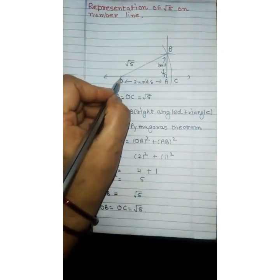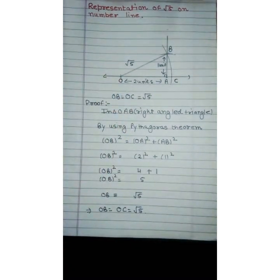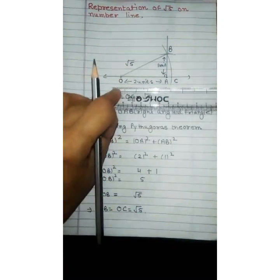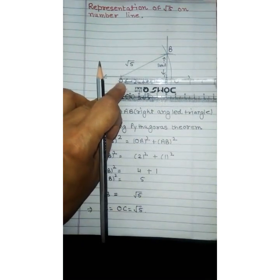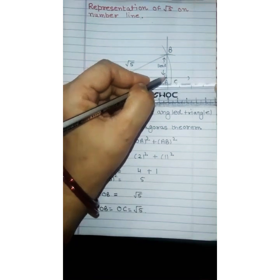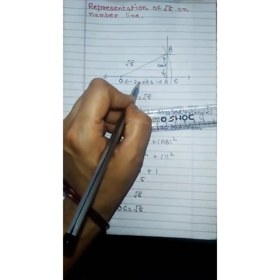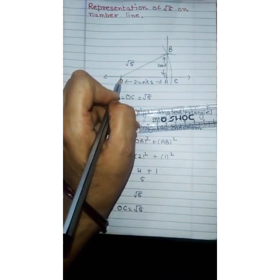Then we take a point O as the origin. After that we take OA equal to 2 units. It means point A is at a distance 2 units from O.